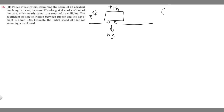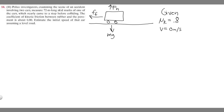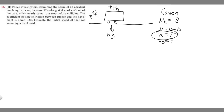Now let's write down what we're given. We know mu sub k, the coefficient of kinetic friction, is 0.8. We know the final velocity of the car is 0, because it nearly comes to a stop before colliding. We don't know the acceleration and we don't know v sub 0 — that's what they're asking us for, the initial speed. We do know the distance traveled, which is 72 meters, so delta x equals 72 meters.